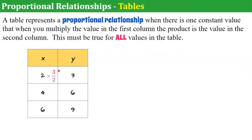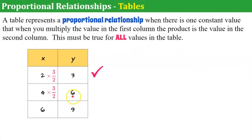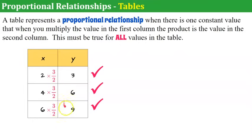Here's another way to look for proportionality in a table. 2 times 3/2: 2 divided by 2 is 1, leaving 3 — it checks. 4 times 3/2: 4 divided by 2 is 2, times 3 is 6 — it checks. 6 times 3/2: 6 divided by 2 is 3, and 3 times 3 is 9 — it checks. So every one of the x values multiplied by 3/2 equals the y value.